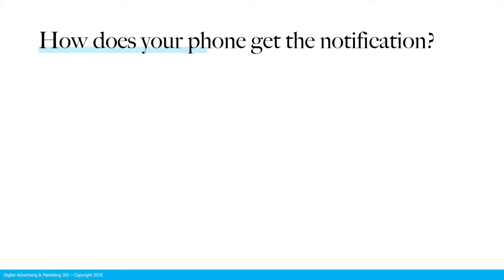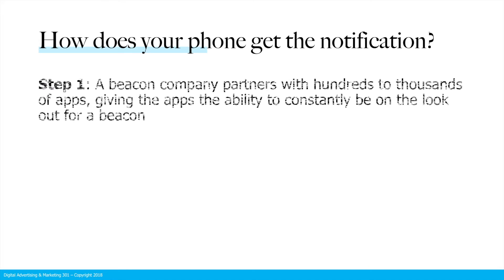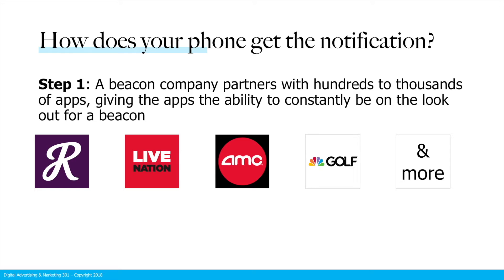So how does your phone actually get any sort of notification from these physical devices? Well, step one is a beacon company or an ad tech company. We need to partner with hundreds to potentially thousands of different apps, giving those apps the ability to constantly be on the lookout for a signal coming from a beacon. And if you have one of these apps installed on your phone, you could potentially get a notification from them.